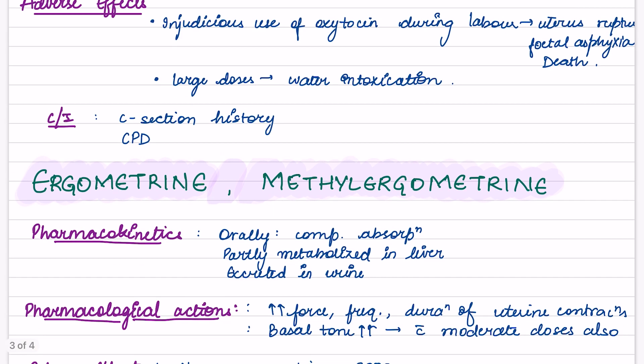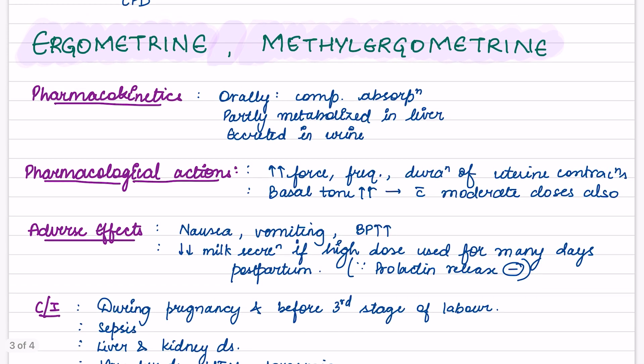Next we have ergot alkaloids like ergometrine and methyl ergometrine. Pharmacokinetics: orally there is complete absorption but they are partly metabolized in liver whereas oxytocin was completely metabolized in liver, and they are excreted in urine. Pharmacological actions: they increase the force, frequency as well as duration of uterine contractions. Basal tone increases with moderate doses also, while with oxytocin, high doses were required.